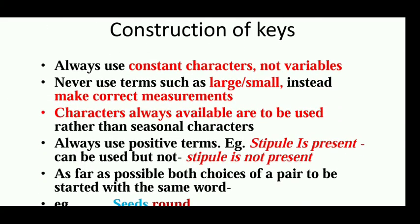Now let us see how the keys are constructed. Always use constant characters, not variable ones. For example, if the flower color is variable but flower size is not variable, then you can use the flower size. Never use terms such as 'large' or 'small'; instead, make correct measurements — 3 inches, 4 inches, 5 inches, like that.